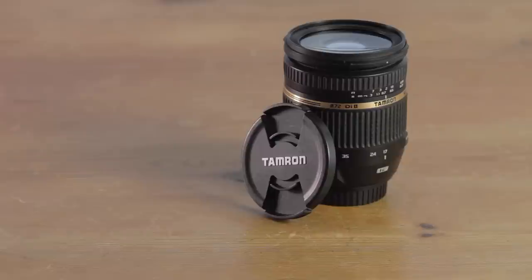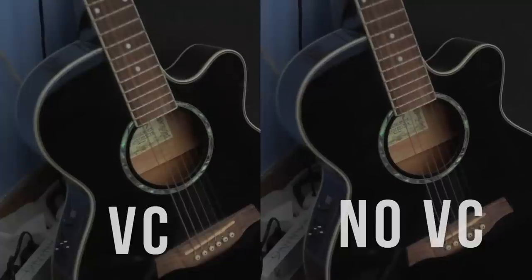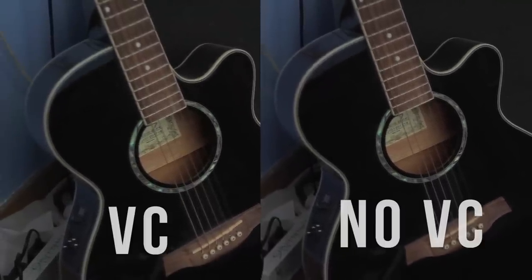So to go with the T3i, this time I'm going to recommend the Tamron 17-50 2.8 VC because this lens is a great focal range for this camera and it gives you the 2.8 aperture which is really nice for getting a shallow depth of field and for low light stuff and it has VC, which is basically image stabilization which means that you can get a lot smoother handheld shots.